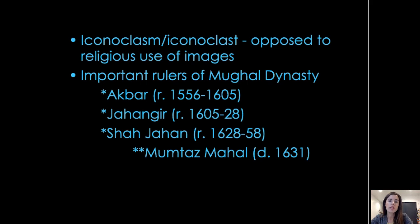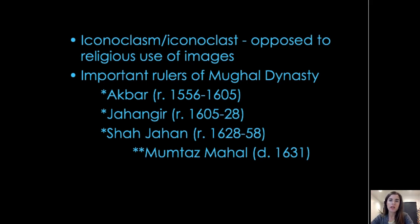Important rulers of the Mughal dynasty include Akbar — meaning great — Jahangir, a ruler whose title meant world Caesar or grabber of the world, not Caesar like Roman Caesar, and Shah Jahan, who was the patron of the Taj Mahal, meaning ruler of the world. We'll also focus on his wife Mumtaz Mahal, who he is buried with at the Taj Mahal. Although these were Muslim rulers, we will actually see representations of the human form in some types of paintings from these rulers.